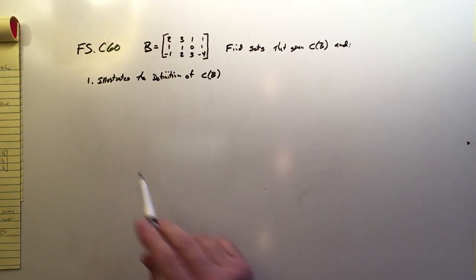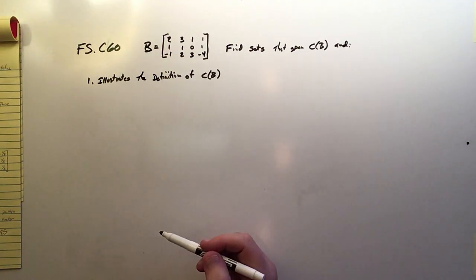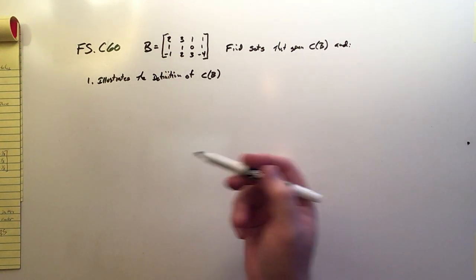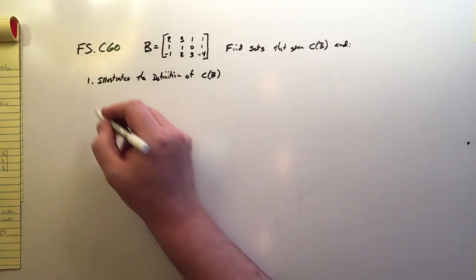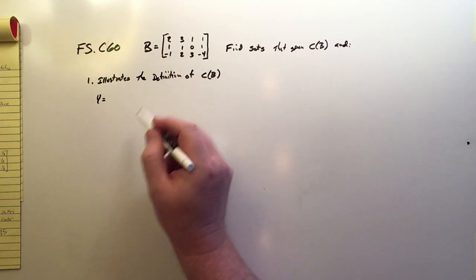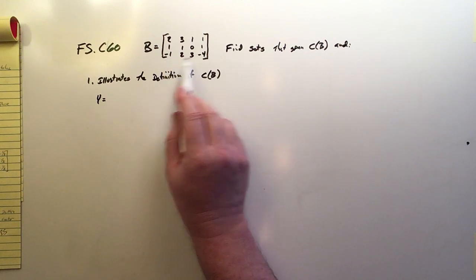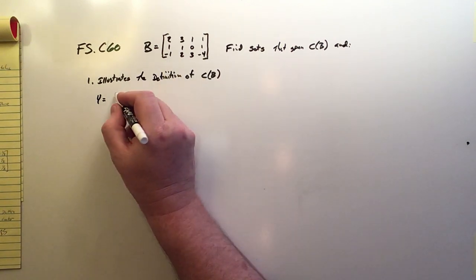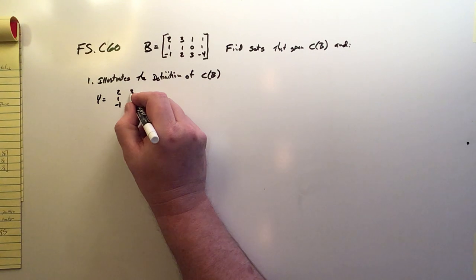The first condition is that it illustrates the definition of column space, and of course, that's kind of the brute force. So we'll call the set Y, and of course, Y in this case is just going to be the set of the four column vectors of B. So 2, 1, negative 1,